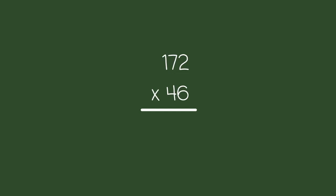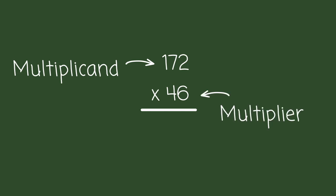Let me give you an example problem: 172 times 46. In this instance, the larger number is called the multiplicand, and the smaller number is simply the multiplier.